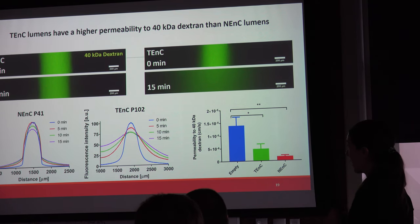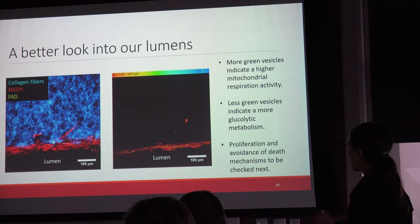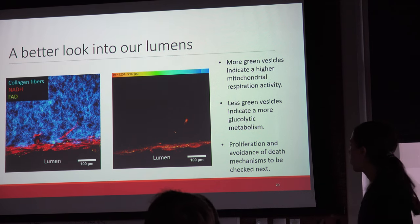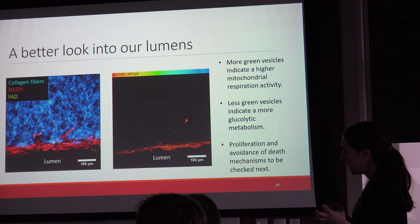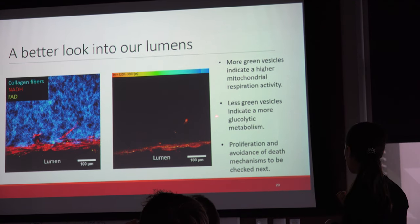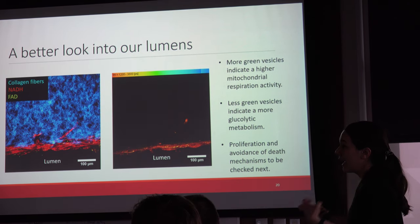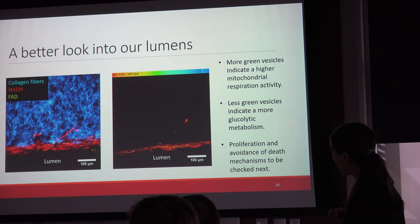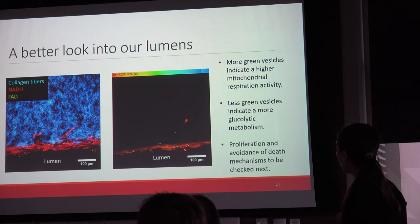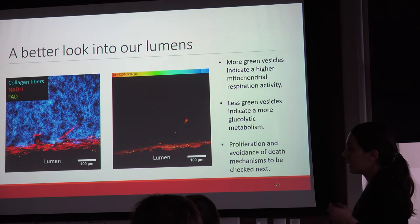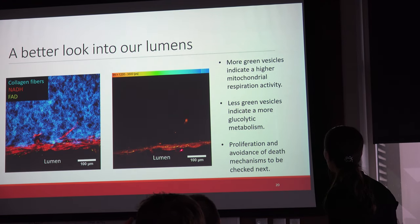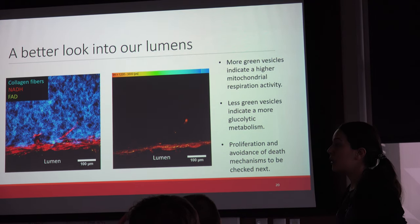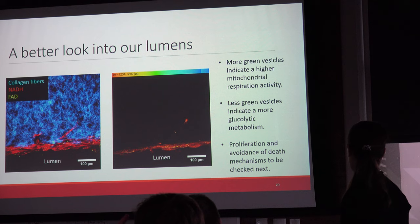We also wanted to examine metabolism, as literature reports that the metabolic rate differs between the trunk of lumens and sprouts, since sprouting cells require more glucose and energy. Using a 40x magnification image of one of our sprouts alongside a FLIM image, we can tentatively see more green vesicles in the trunk region compared to the sprout area, suggesting different metabolic activity between these two compartments — something we'll be confirming soon.